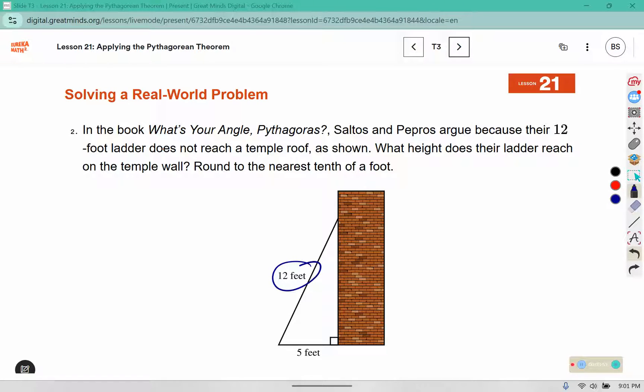This is the hypotenuse. That goes in the C's position. We don't know this length here, so I'm going to use B to represent that. 5 squared is 25. 12 squared is 144, so we move the 25 over.